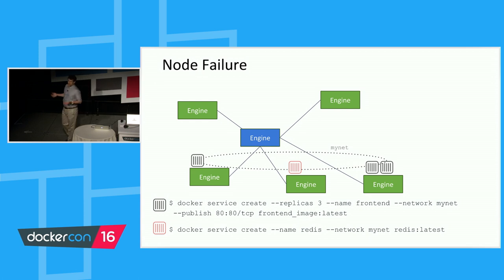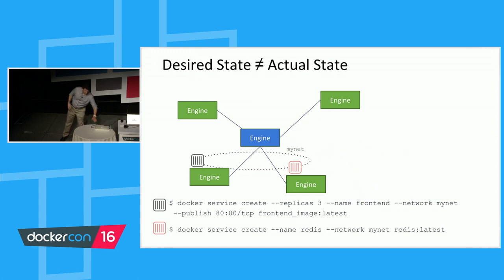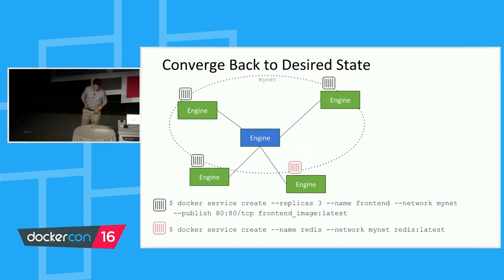I want to talk about node failure — one of the parts of the system we're most proud of. There's no single point of failure, and the system recovers from machine failure without operator intervention. If a node dies and was running two containers, those containers go away, creating a deviation between desired and actual state. The desired state was three replicas, but now only one is running. Docker 1.12 orchestration kicks in and starts two new containers to bring actual state back in line with the desired state of three.